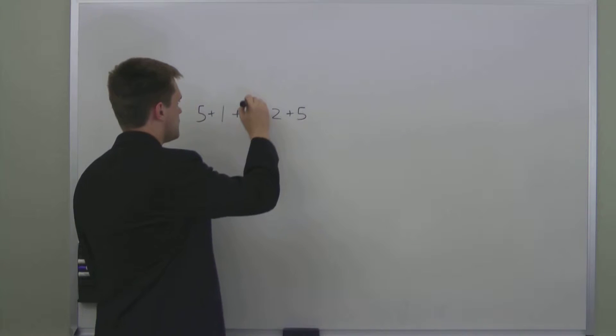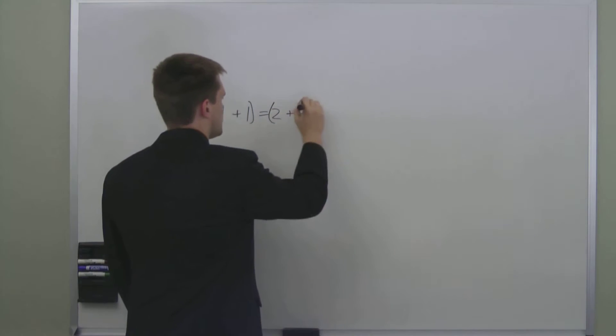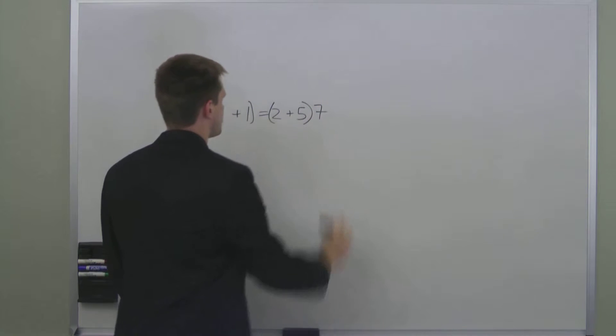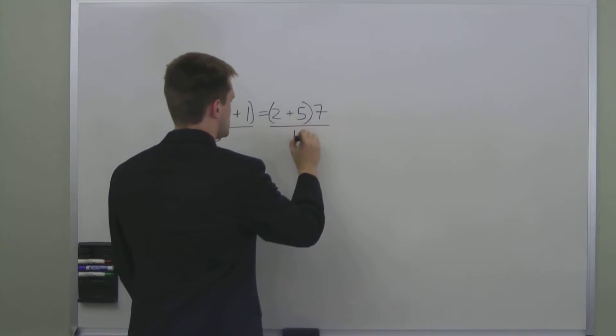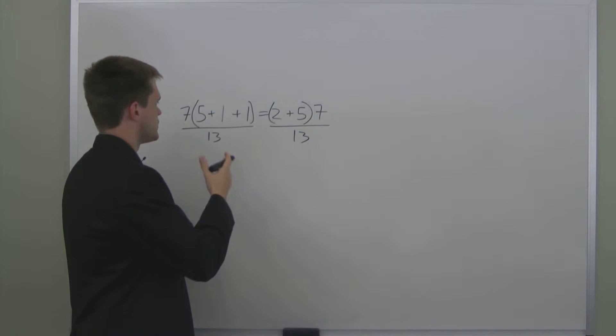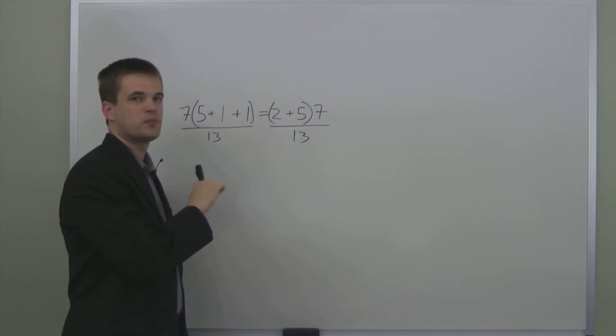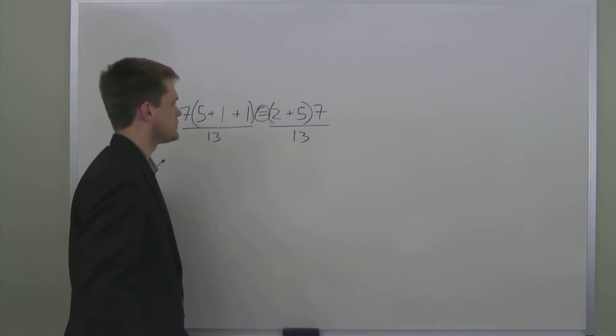We can multiply both sides of the equation by 7 and the equation is still true. We can divide both sides of the equation by 13 and this equation is still true. Anything you perform on both sides of the equation equally do not invalidate the equation.